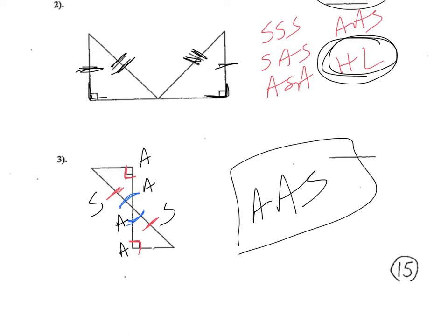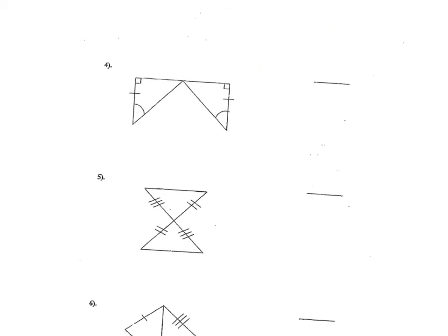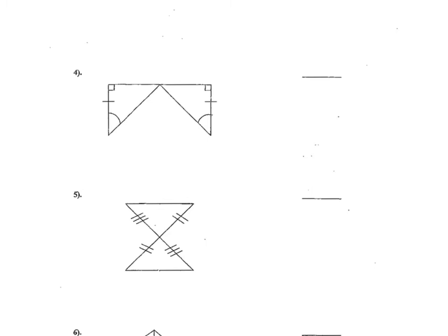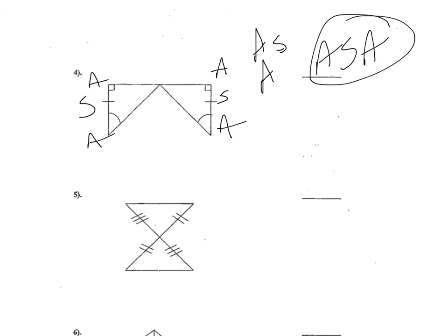On the next page, in this example, it appears as though we have two angles and the side in between them: this angle, the side in between, and then another angle — angle, side, and another angle. So I'm going to use angle, side, angle.